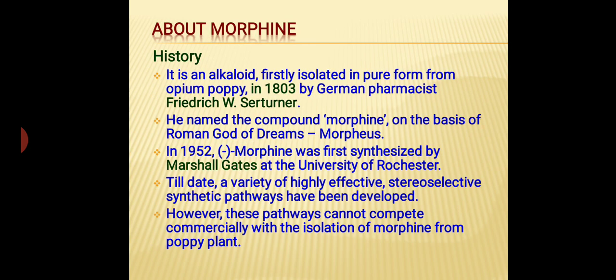Morphine is an alkaloid that was firstly isolated in pure form from opium poppy in 1803 by German pharmacist Friedrich W. Sertürner. He named the compound morphine on the basis of the Roman god of dreams, Morpheus. In 1952, the levorotatory form of morphine was firstly synthesized by Marshall Gates at the University of Rochester.